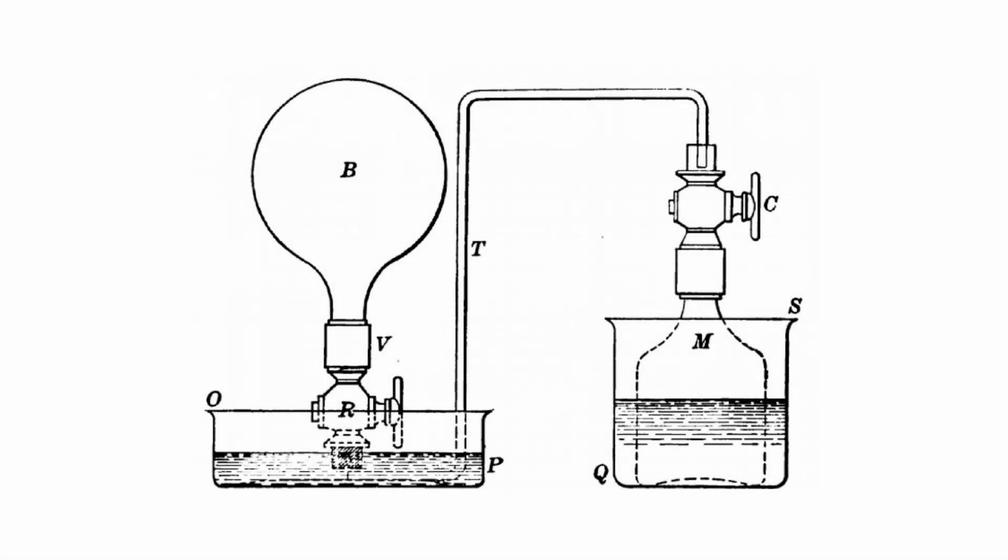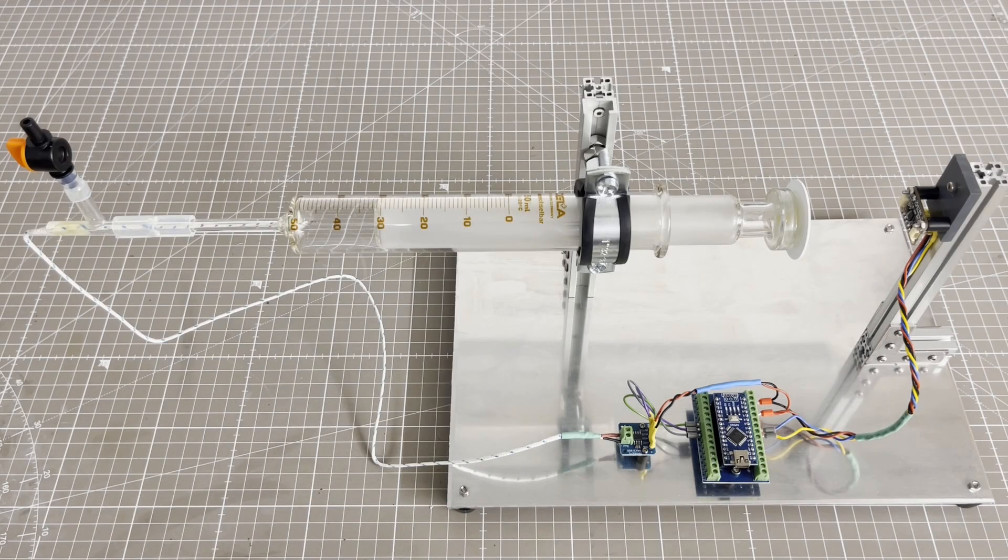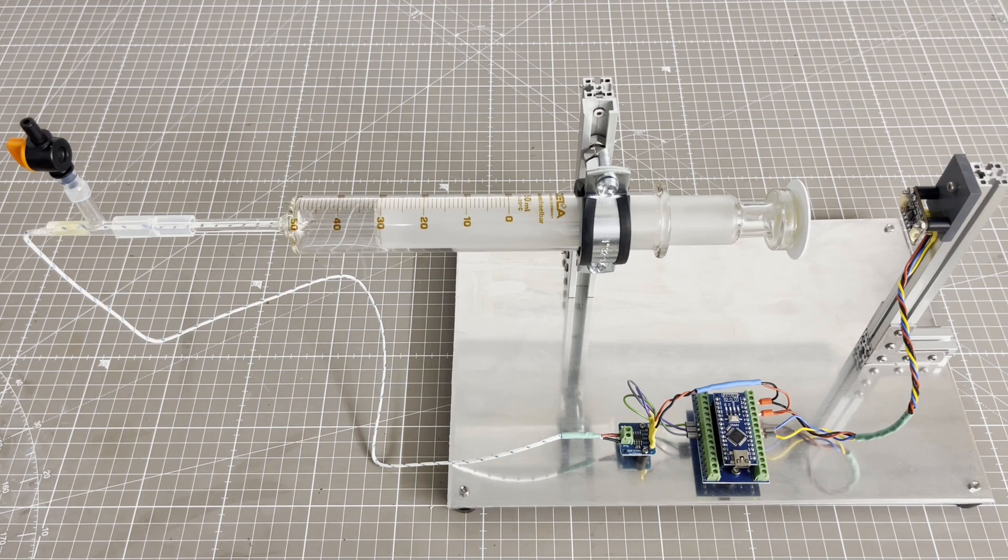This is the apparatus that the French chemist and physicist Joseph-Louis Gay-Lussac built to investigate Charles's law. And that's the apparatus I built. I will now show you how I built the apparatus and explain how it works.